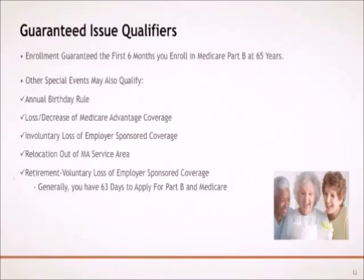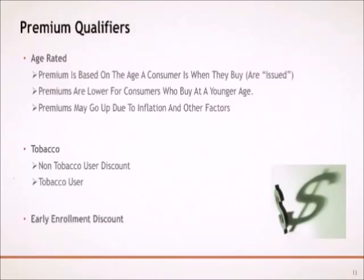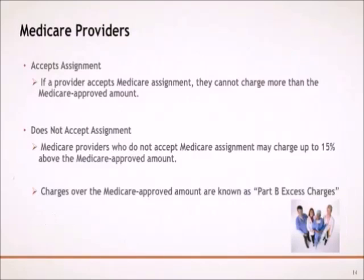If you retire from a company and you were covered under their group health coverage, you have up to 63 days to apply for a Medicare Supplement Policy to get guaranteed issue. The premiums for each Medicare Supplement Policy vary by insurance company based on several qualifiers, such as: Age Rated — the premium is based on the age of the consumer when they buy the policy. Premiums are lower for those who purchase a policy at a younger age, and premiums may go up due to inflation and other factors. There are also premium discounts for non-tobacco users, and early enrollment discounts for those who enroll at age 65.